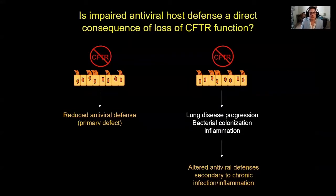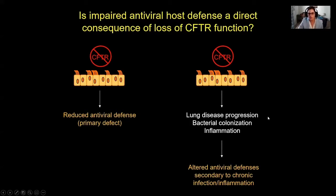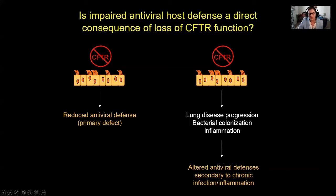This has led to the idea that exposure to chronic inflammation in the CF lung perhaps leads to a permanent alteration in antiviral host defense responses in CF airway epithelia. Our lab has found it useful to ask whether this impairment of antiviral host defense is a primary or secondary consequence of loss of CFTR function. It's possible that loss of CFTR function directly leads to impairment — a primary defect — or alternatively, that it contributes indirectly through progressive lung disease with recurrent bacterial infection and inflammation causing epigenetic changes impacting antiviral responses.